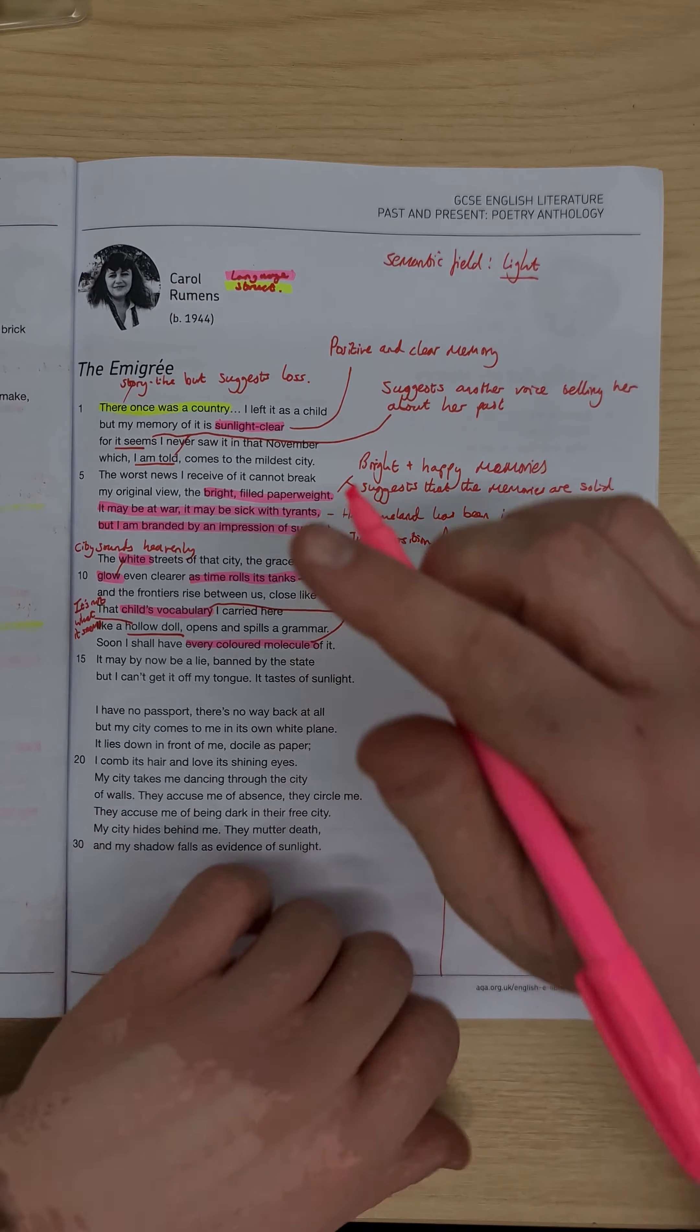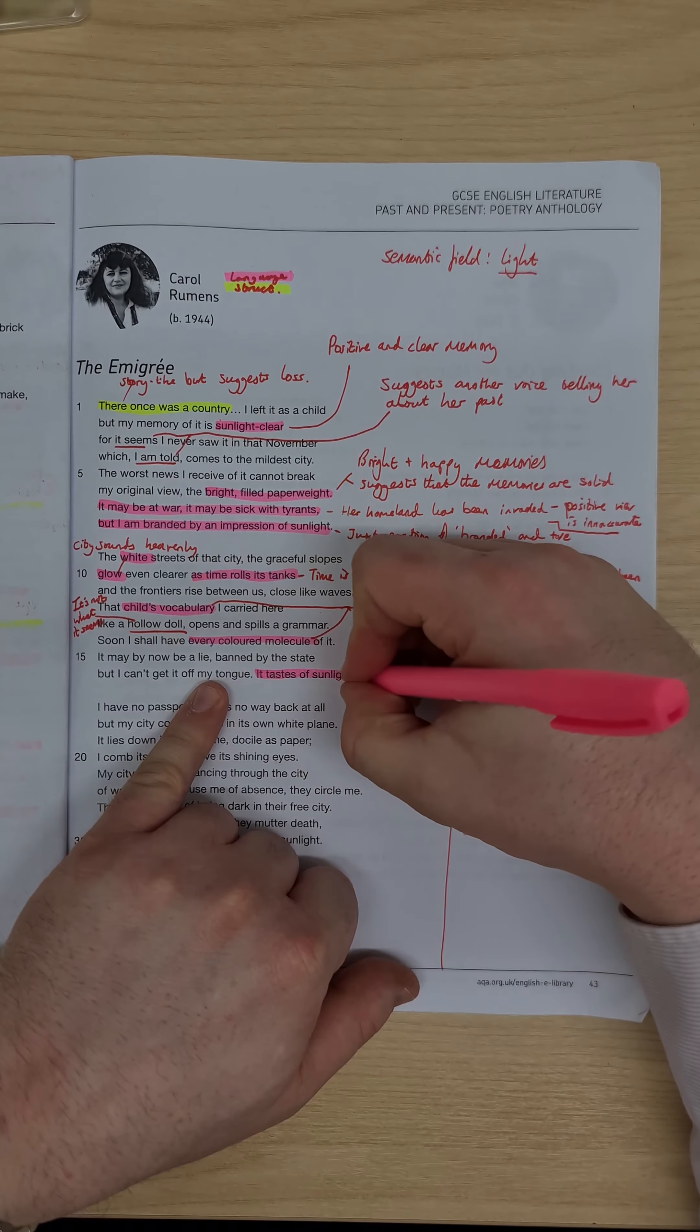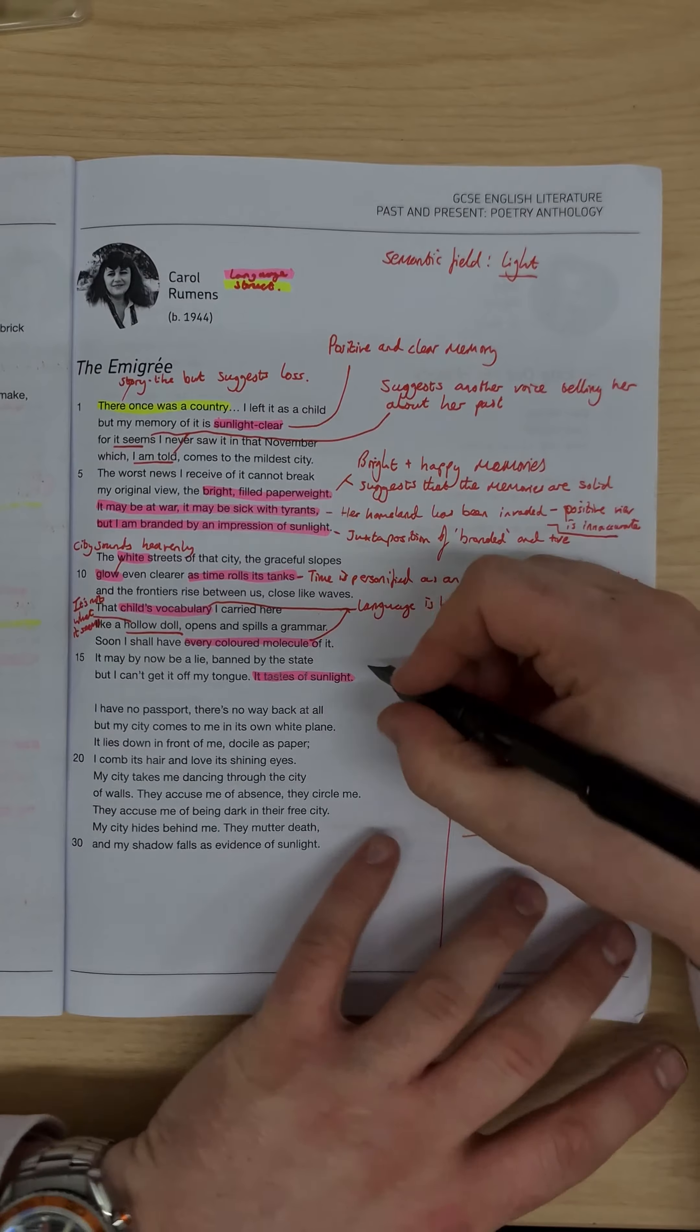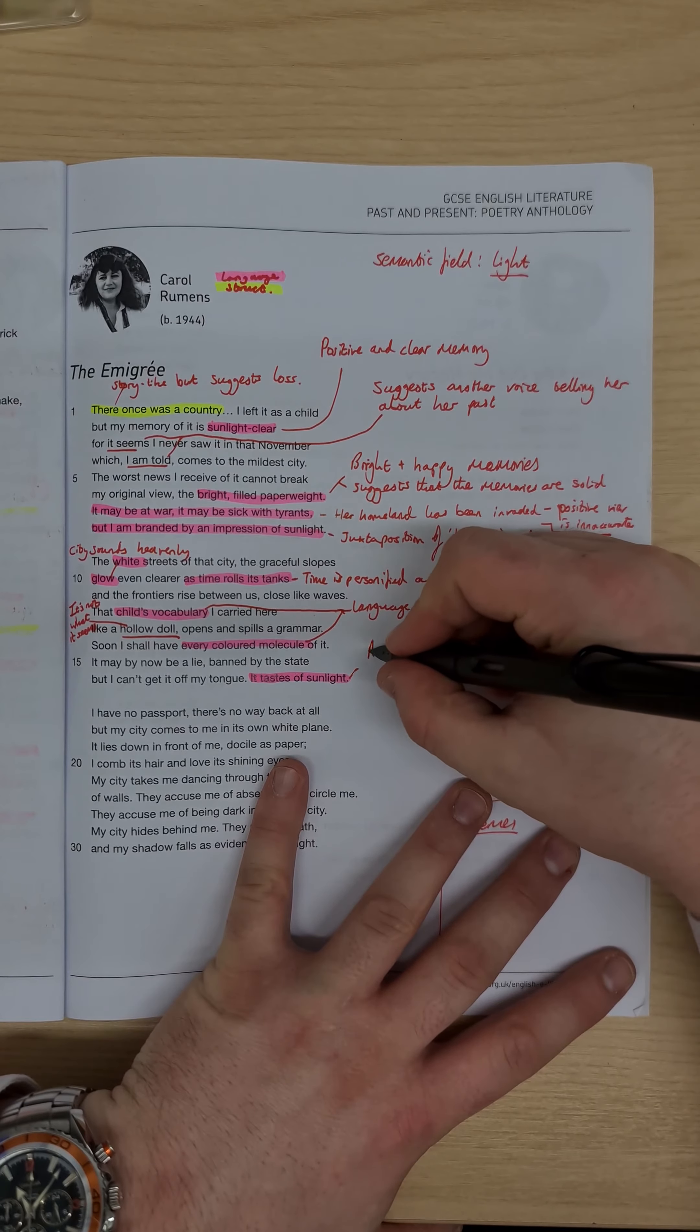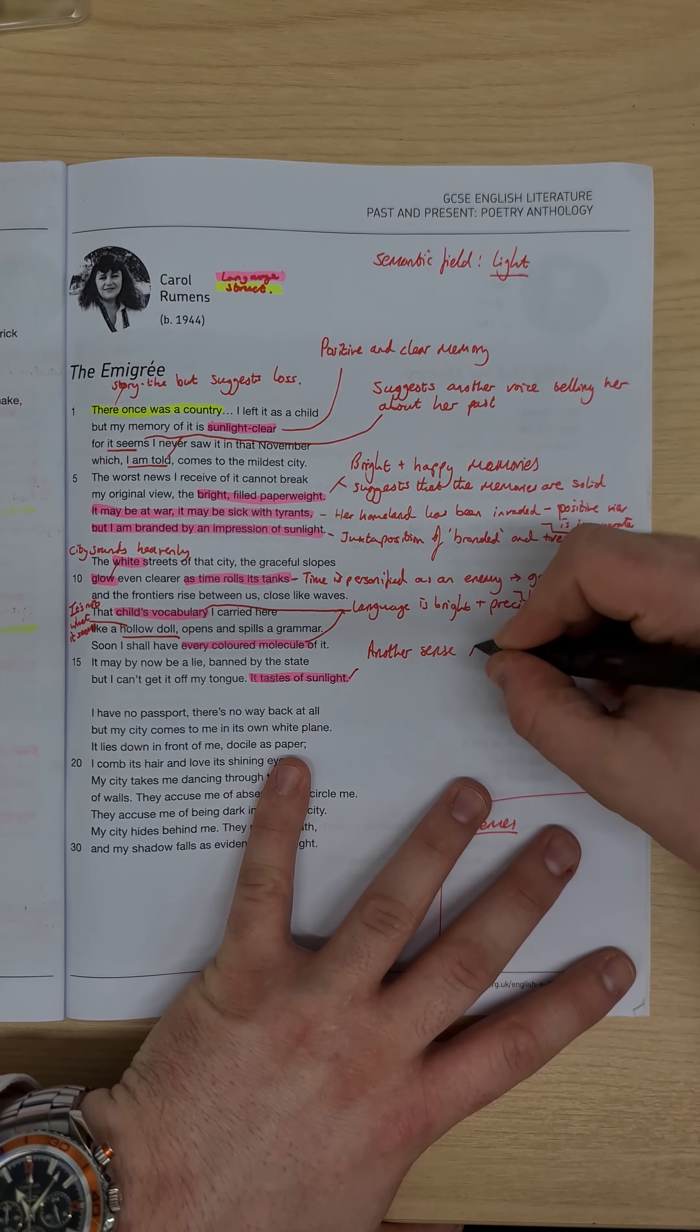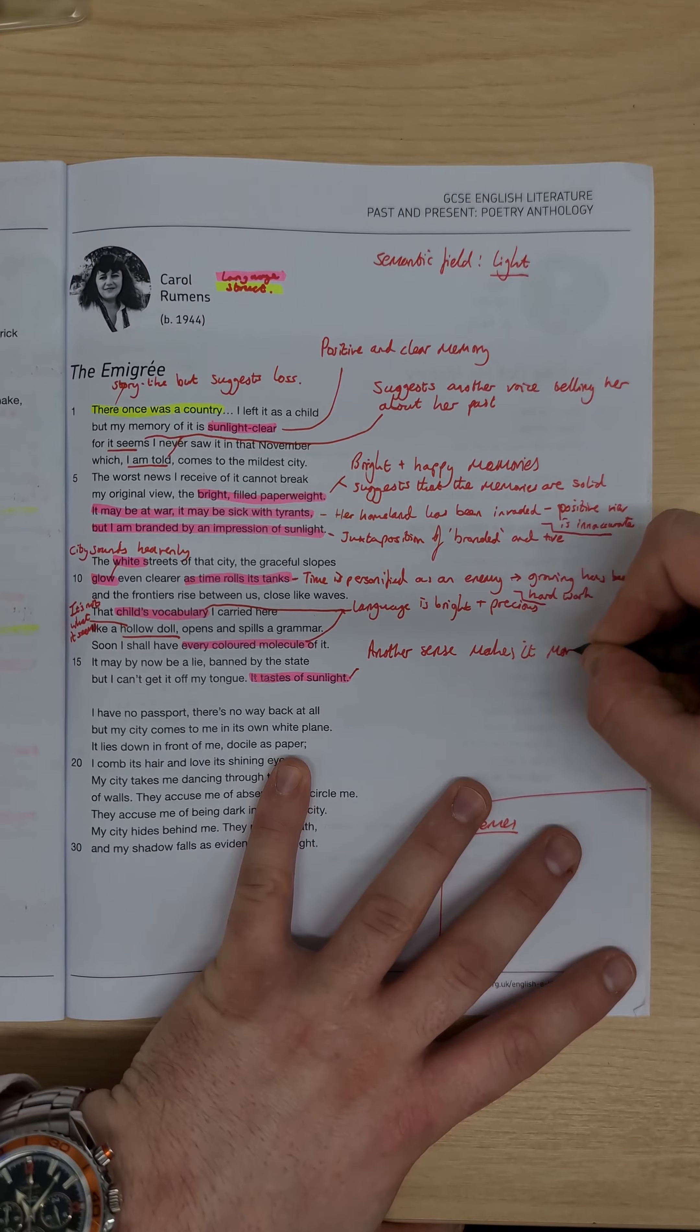Finishing off this stanza, we have the It Tastes of Sunlight. So we have this bright imagery again, again coming back to this semantic field of light. So another sense makes it more vivid.